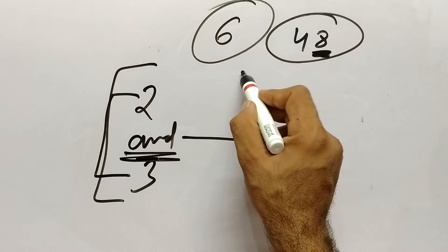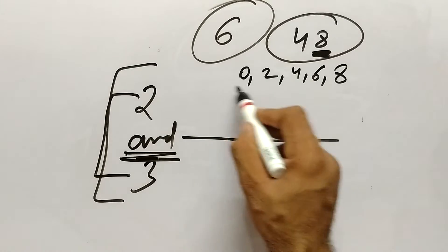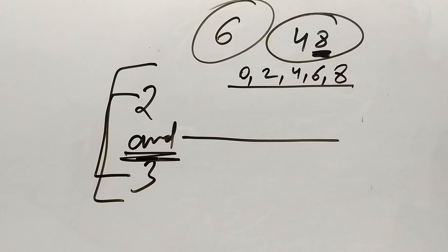Woh kya ho: 0, 2, 4, 6 or 8. In mein se koi bhi ho, to what we can say that this number is exactly divisible by 2.